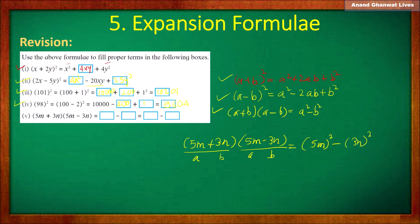The square of 5m is 25m² and the square of 3n is 9n². So the final answer is 25m² − 9n².